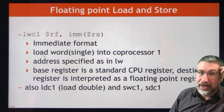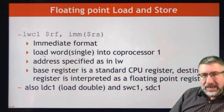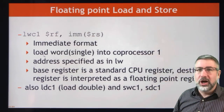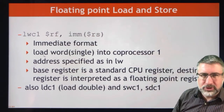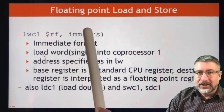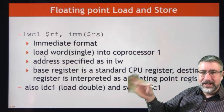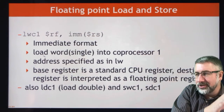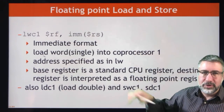The instruction LWC1 loads from memory into coprocessor 1 — C1 stands for coprocessor 1, with the expectation there would be more, but in practice there's usually only the floating point coprocessor. LWC1 loads a word into a coprocessor register: you specify a floating point destination register RF, but the address is still held in the regular register RS. The coprocessor doesn't have addresses or access to data memory; the load is executed on the regular side using a CPU register, while the target register is on the floating point coprocessor side.